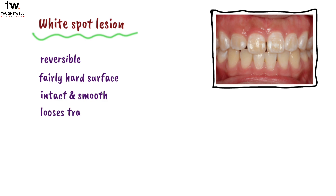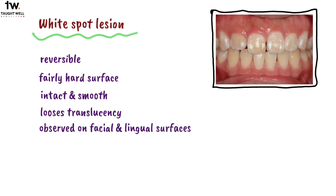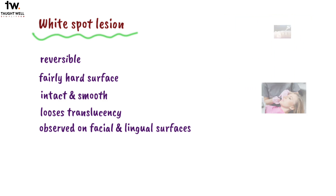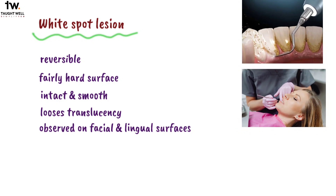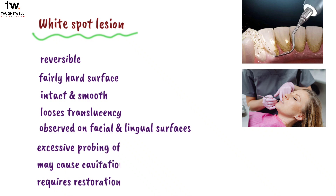These areas of enamel lose their translucency because of extensive subsurface porosity caused by demineralization. They are usually observed on the facial and lingual surfaces of teeth. Non-cavitated caries of enamel can remineralize if immediate corrective measures are taken, including plaque removal and fluoride therapy. An important point is that excessive probing of a white spot lesion may cause cavitation, so we must use the probe very carefully.